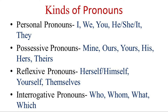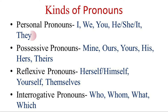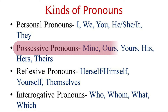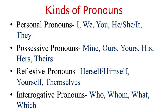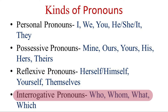There are various kinds of pronouns. Let us see some of them. Personal pronouns like I, we, you, he, she, it, they, etc. are used as a simple substitute for the proper name of a person in a sentence. Possessive pronouns like mine, ours, yours indicate the relationship between objects and people. Reflexive pronouns like herself, himself, yourself, themselves are used to refer back to the doer of the actions. Interrogative pronouns are used to ask questions: who, whom, what, which.